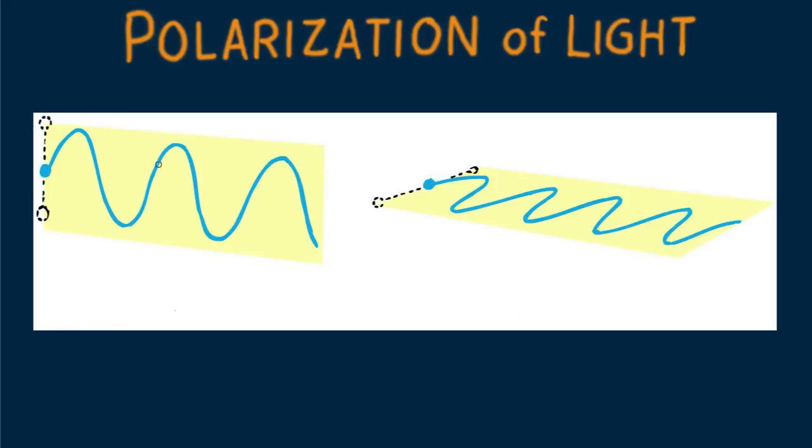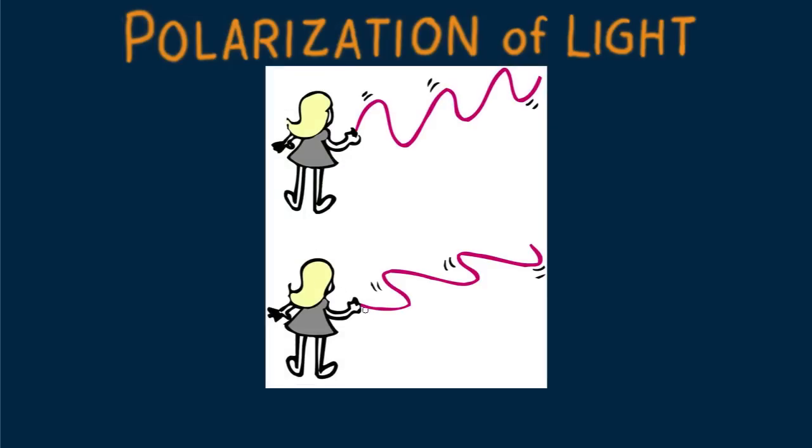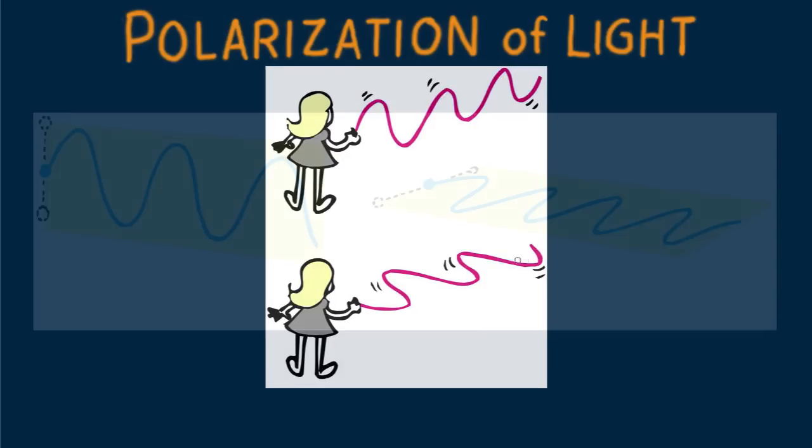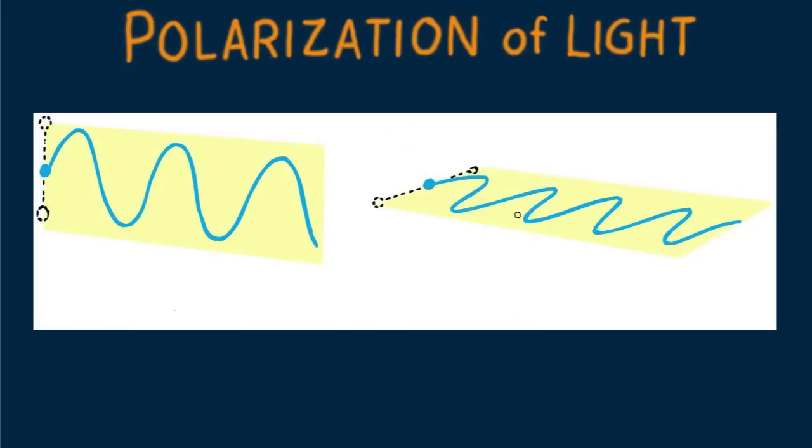Here we have a vertically polarized wave. Vibration from side to side produces a horizontally polarized wave.